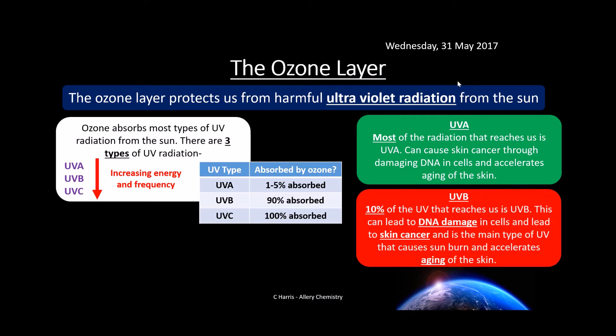10% of UVB actually reaches us. This can also lead to DNA damage and is worse than UVA, so if it does reach us it will cause serious damage and may lead to skin cancer. UVB is the main type of UV that causes sunburn — if you're burnt by the sun it will be UVB that caused that burning. Like UVA, it also accelerates aging of the skin.